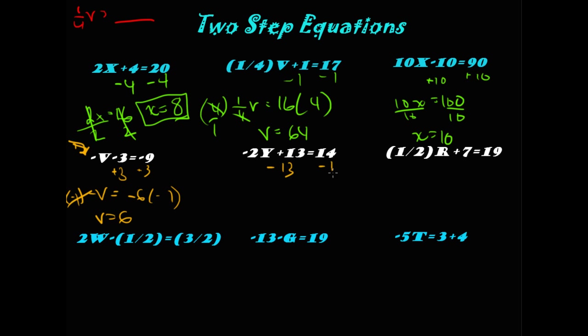We're going to subtract 13 from each side, leaving us with negative 2y is equal to 1. And then, we divide by negative 2. Which leaves us with y is equal to negative 1/2. Just because it's an odd, not a whole number or anything, don't assume that you're wrong. A right answer is a right answer. And all you have to do is plug it right in to find out if you're correct.